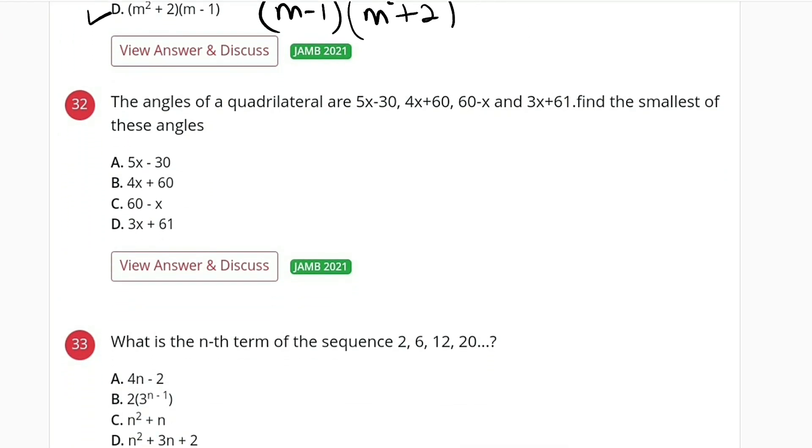Question number 32: The angles of a quadrilateral are 5x minus 30, 4x plus 60, 60 minus x, and the last one 3x plus 61. Find the smallest angle. We know that for a quadrilateral, the sum of the interior angles is 360 degrees, so let us add all of them together and find the value of x.